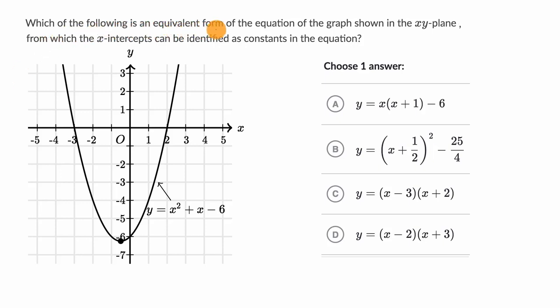We're asked, which of the following is an equivalent form of the equation of the graph shown in the xy-plane from which the x-intercepts can be identified as constants in the equation?